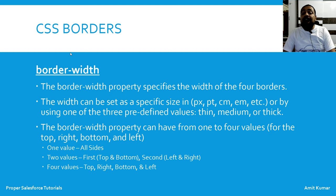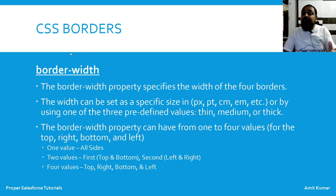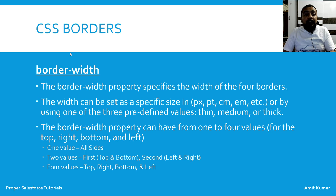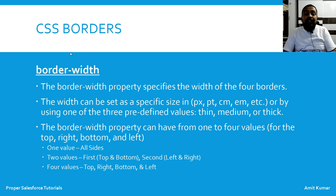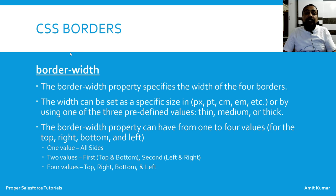The border-width property can have from one to four values. If only one value is provided, that width will be applied to all four sides. If two values are provided, the first applies to top and bottom, and the second to left and right. If four values are provided, you can set individual widths in the order: top, right, bottom, and left.